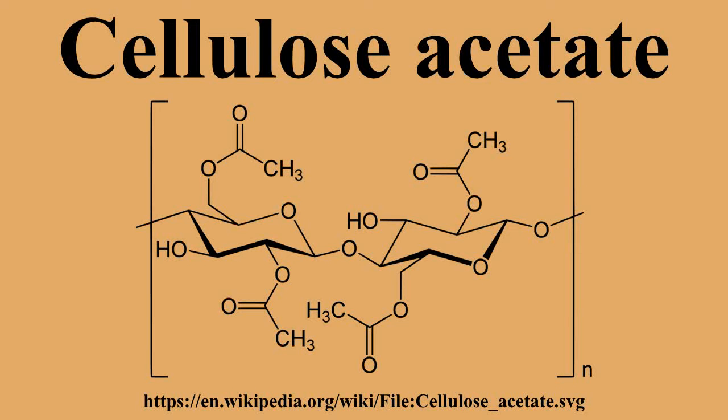The Federal Trade Commission definition for acetate fiber is a manufactured fiber in which the fiber-forming substance is cellulose acetate. Where not less than 92% of the hydroxyl groups are acetylated, the term triacetate may be used as a generic description of the fiber. Acetate is derived from cellulose by deconstructing wood pulp into a purified fluffy white cellulose. Special qualities of dissolving pulps are used, though a common problem is that the reactivity of the cellulose is uneven, which can impact the quality of the cellulose acetate.